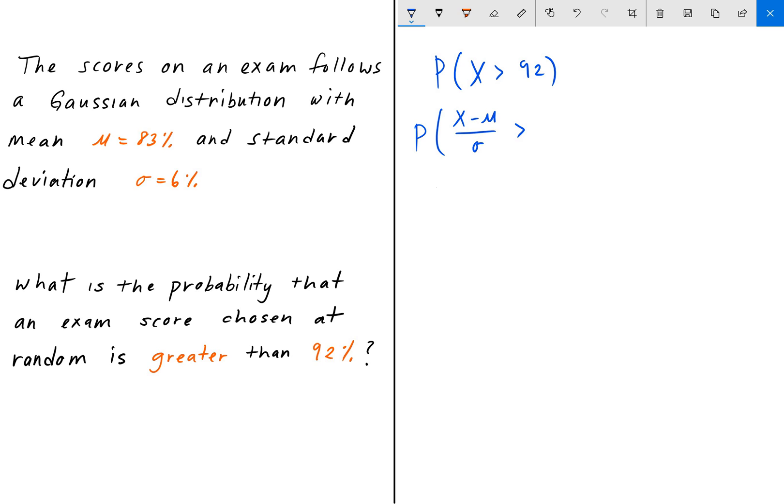So this would be 92 minus 83, which is our mean, and then we divide it by our standard deviation of 6. And so this on the left-hand side is our definition of z.